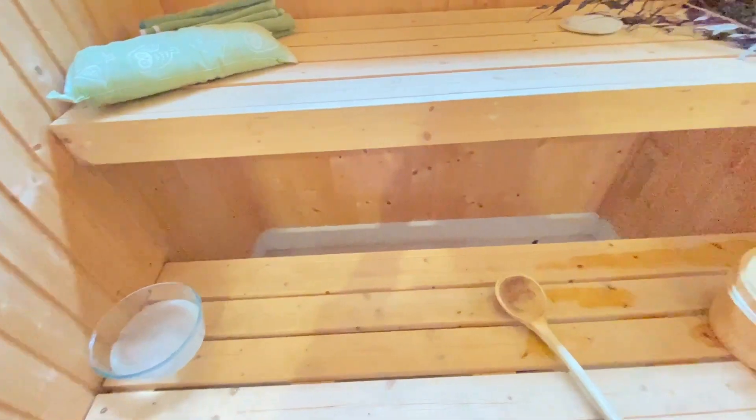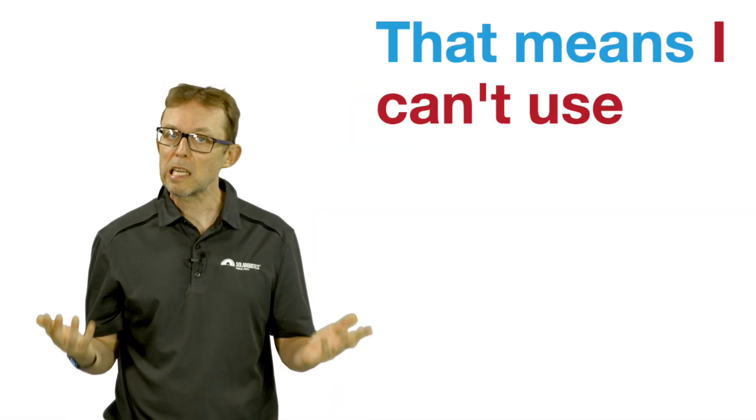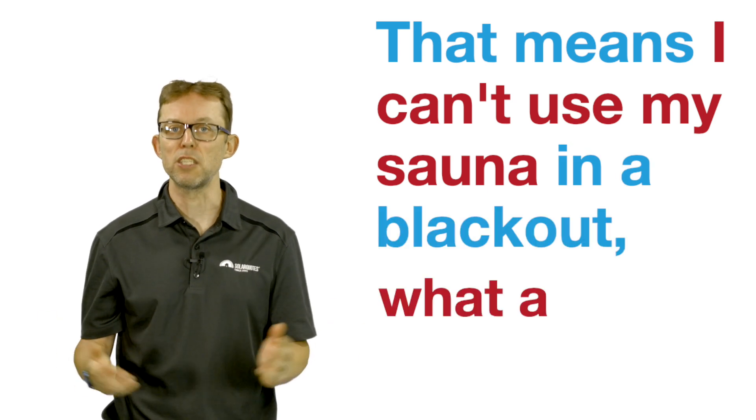Be aware of the power and energy needs of your home when choosing a home battery. If your solar battery can only provide three kilowatts and your home needs five kilowatts, you'll need to get the power shortfall from the grid. For example, I have a Finnish sauna in my home that pulls seven kilowatts. I can't run it entirely off my Powerwall because that only outputs five kilowatts. That means I can't use my sauna in a blackout. What a hardship.